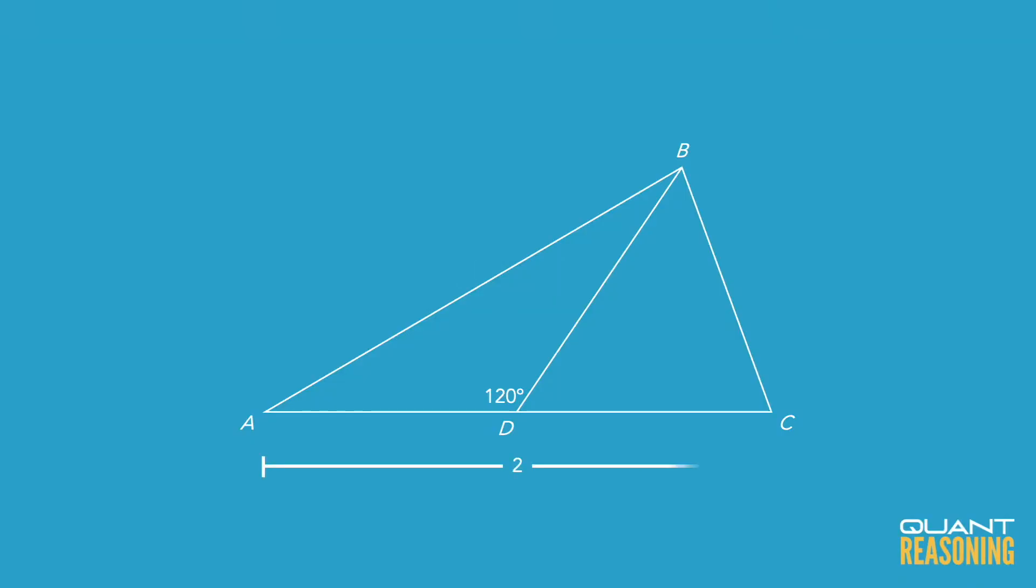You see, if the length of AC is 2, and the length of DC is 1, and we know that BD is also 1, we can infer that AD is 1 as well, and then we have an isosceles triangle.